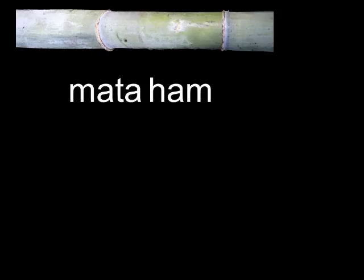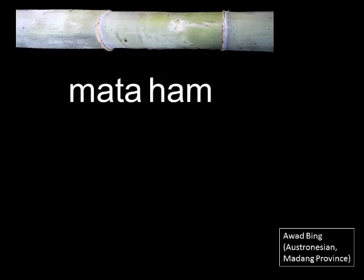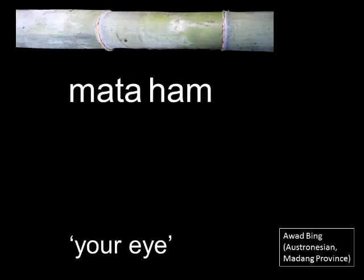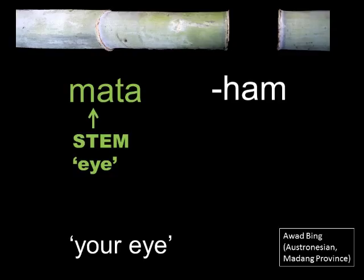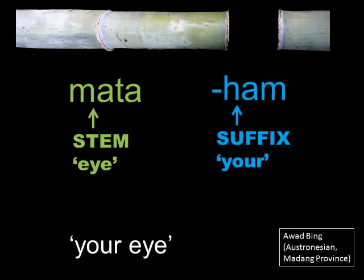Now, let's look at an example from a Pacific language. We'll use the example of 'mataam' from the Awadbing language, an Austronesian language spoken in Madang province. 'Mataam' is one word in Awadbing, but the meaning in English is 'your eye' — we need two words in English because 'mataam' contains two morphemes. The first morpheme is the stem 'mata', meaning 'eye', which is the same as in many Austronesian languages. The second morpheme is the suffix 'um', meaning the eye belongs to you.